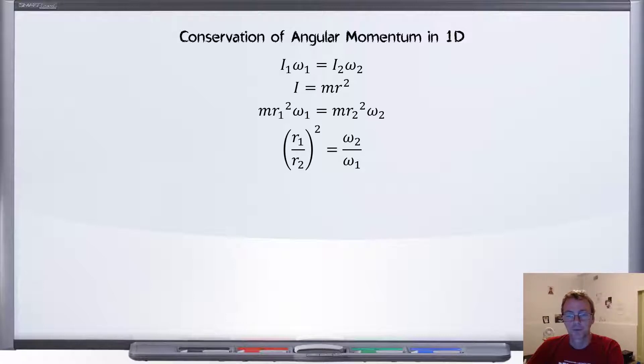So plugging in the numbers, we heard the gentleman say that his estimate for the radius change was going to be a 10 to 1 ratio. And his estimate for the starting speed was 2 revolutions per second. If we run with that, we will get a predicted value of 200 revolutions per second. And that is equivalent to 12,000 rpm.